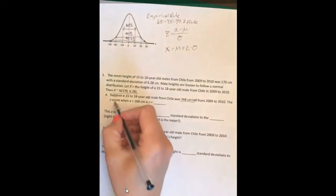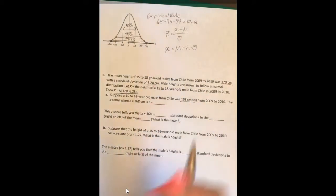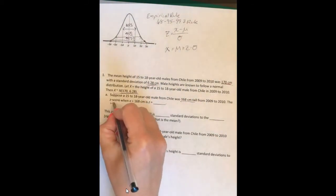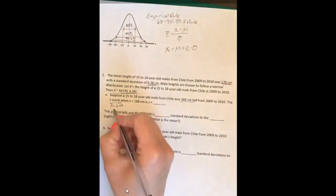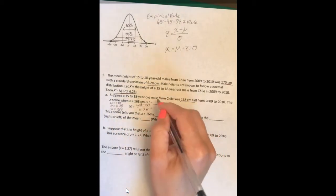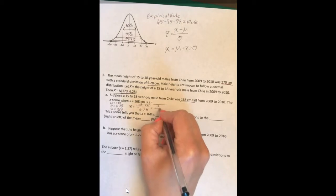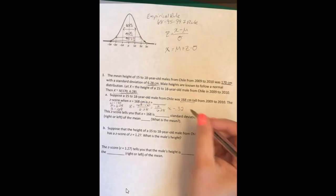All right, so we know from the given information that the mean is 170 and the standard deviation is 6.28. We want to know when x is 168. So we are going to plug this in: 168 minus 170 divided by 6.28. I already did these calculations in my calculator ahead of time. You would just plug these in and I get approximately negative 0.32.